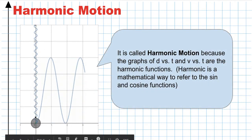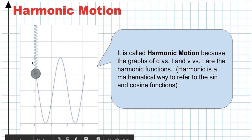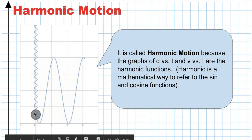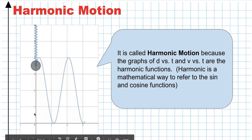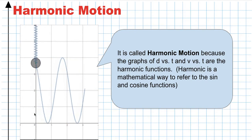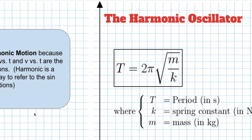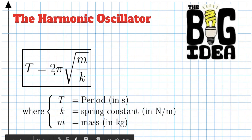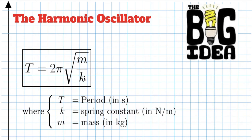Sines and cosines are called the harmonic functions, so harmonic motion is the smooth motion of a mass on a spring moving up and down — or left to right — that produces sine waves. For more depth we'd study this in AP Physics, but we're just going to use the result: when you have a mass on a spring, you get harmonic motion, and the period — the time to complete one cycle — is given by a formula.